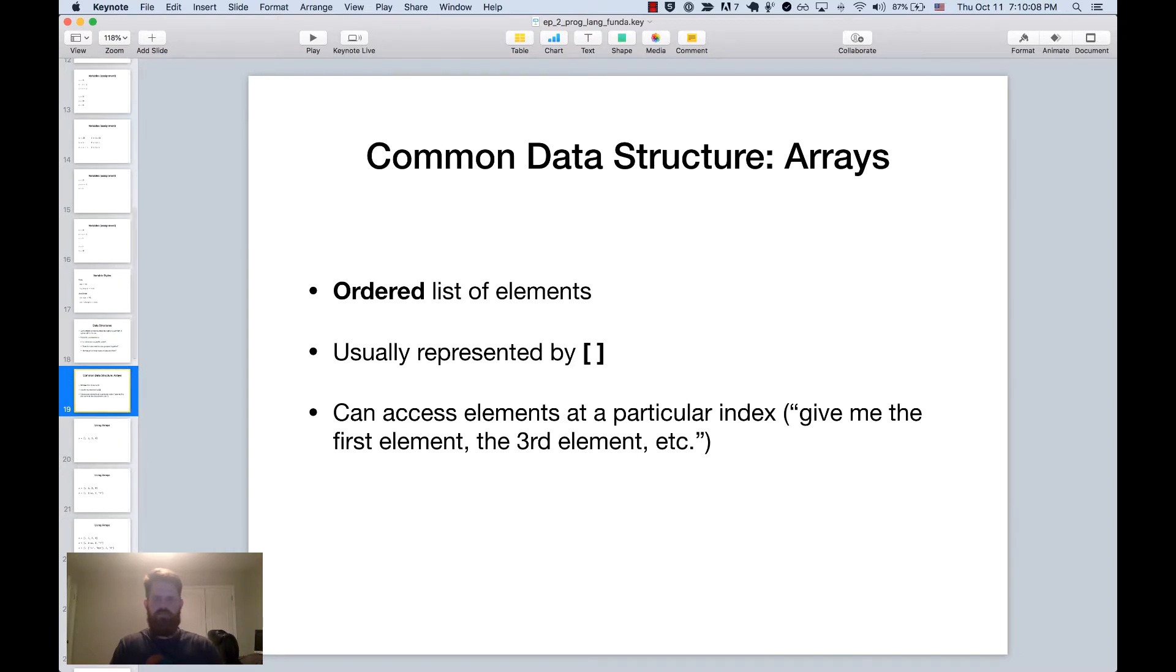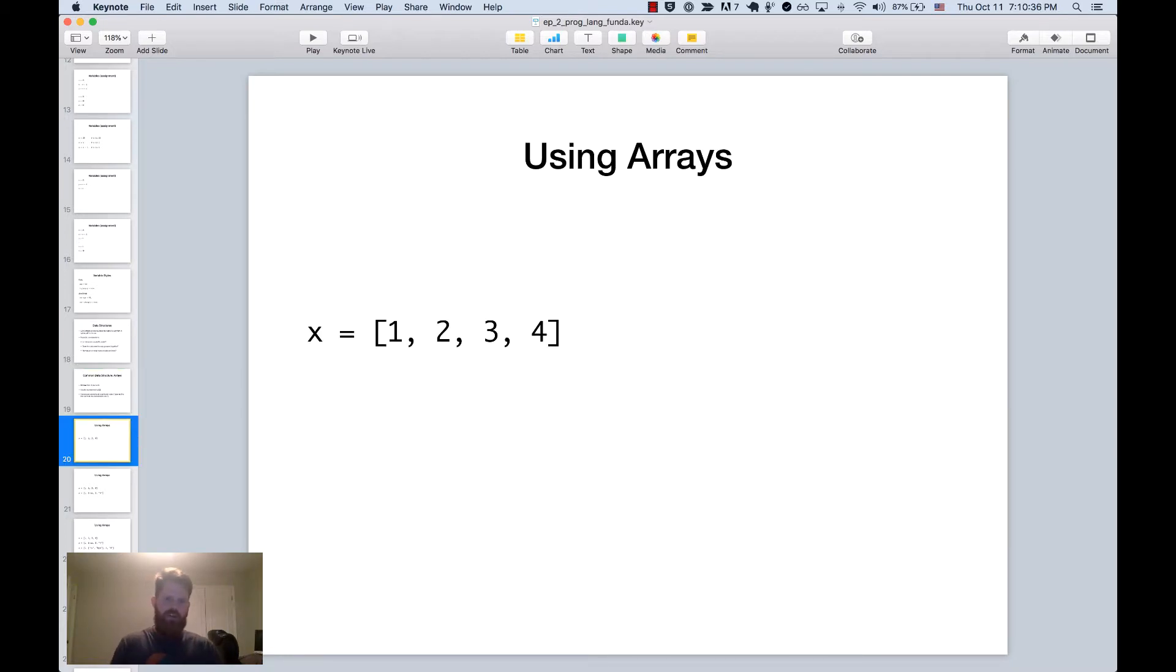So one of the most common data structures you'll see, which is present in almost every language, is the array. And the array is an ordered list of elements. And the orderedness is important here. It's usually represented by two square brackets, open close. And it's useful for accessing elements when you know where it is in the array. So if you want the first element or the third element, you can access that thing specifically. Now arrays are generally constructed between two square brackets. So here we make an array and store it in the variable x. And we store the elements 1, 2, 3, and 4. Now we can store basically anything we want in an array. So if we wanted to store the number 1, the boolean value true, the number 3, and then the string 4, that's okay, at least in Ruby, in most other languages as well.